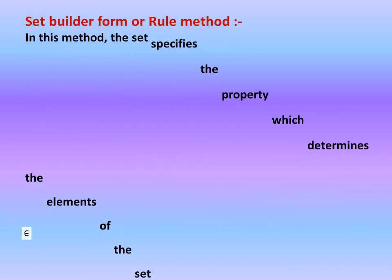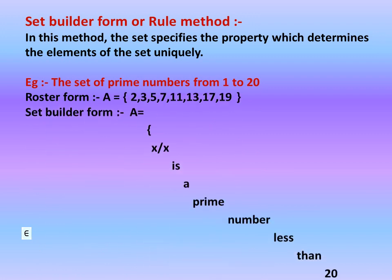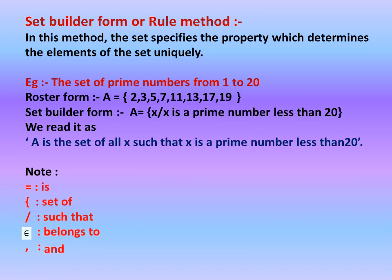The second method is set builder form, also called rule method. In this method, the set specifies the property which determines the elements uniquely. For example, the set of prime numbers from 1 to 20. In roster form, A = {2, 3, 5, 7, 11, 13, 17, 19}. All the prime numbers between 1 to 20.